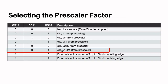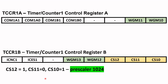To select the prescaler factor, bits CS10, CS11, and CS12 in TCCR1B must be set accordingly. For this video, a 1024 prescaler factor is used. That means CS10 must be set to 1, CS11 to 0, and CS12 to 1.